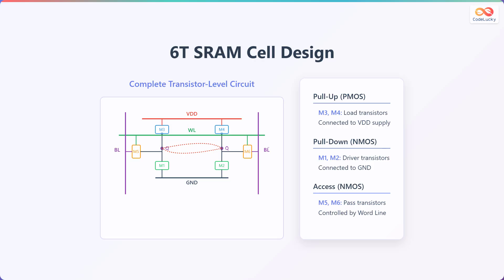On the left, you'll see the complete transistor-level circuit. This includes pull-up transistors, which are P-channel metal oxide semiconductor transistors, or PMOS, pull-down transistors, which are N-channel metal oxide semiconductor transistors, or NMOS, and access transistors, which are also NMOS. On the right, we have a detailed breakdown. The pull-up transistors, M3 and M4, act as load transistors connected to the VDD supply.